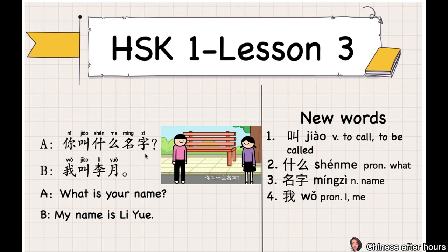你叫什么名字? 你 means 'you'. 叫 means 'to be called'. 什么 means 'what'. 名字 means 'name'. So 你叫什么名字 means 'What is your name?'